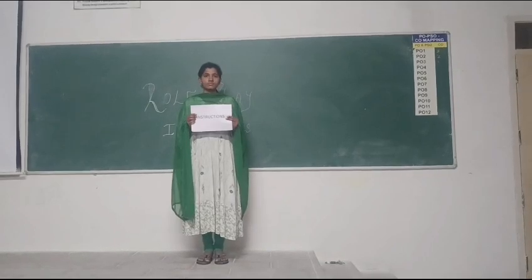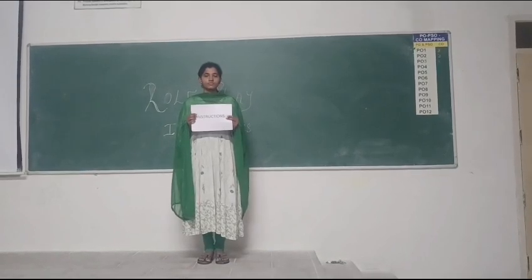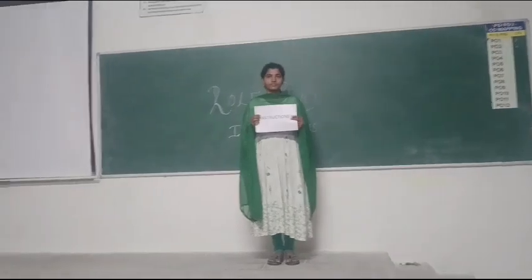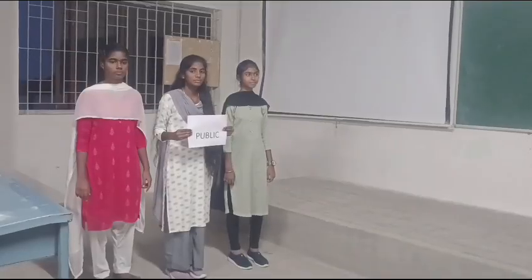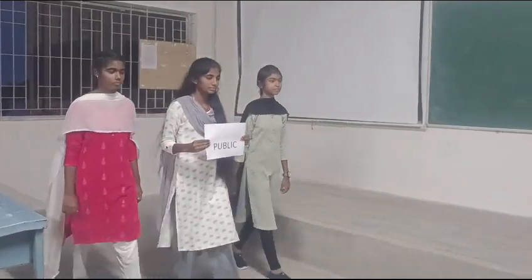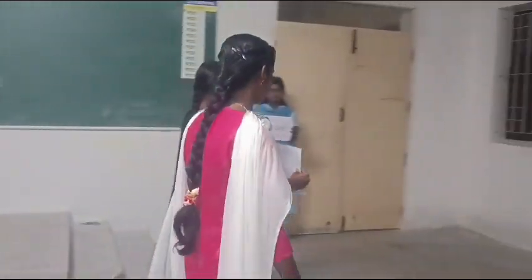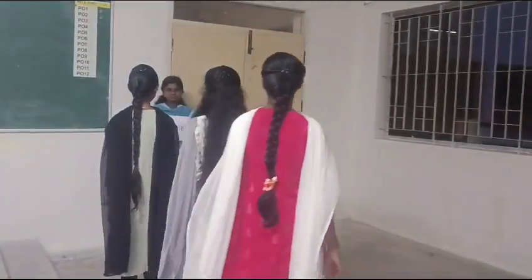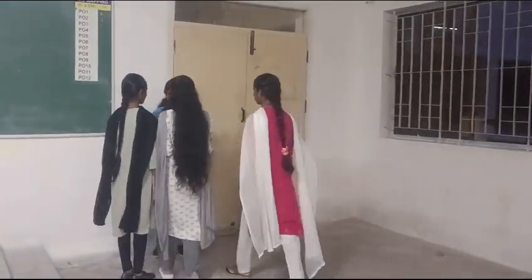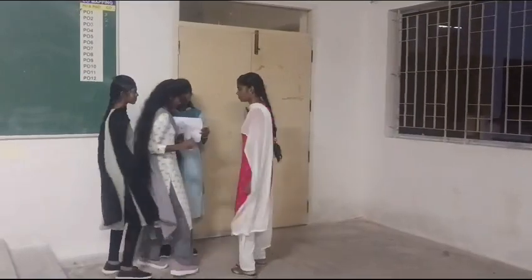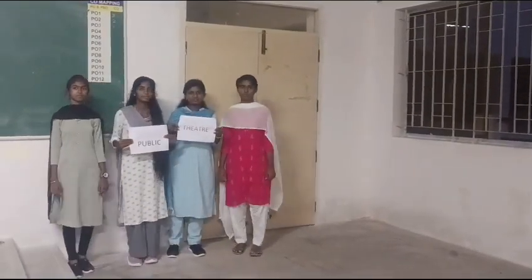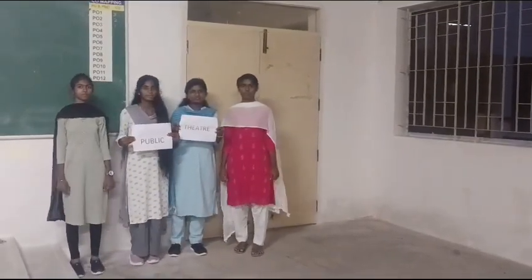Now we can see the directions of going to the theatre. It starts with an action verb — that is, the verb. It should be in points, like: go straight, take left, to reach our destination. It should be in a logical sequence.